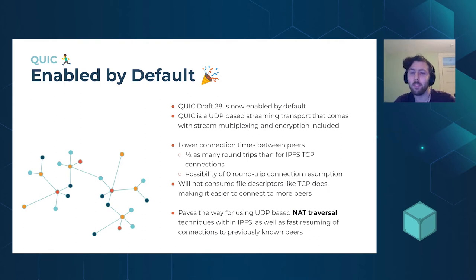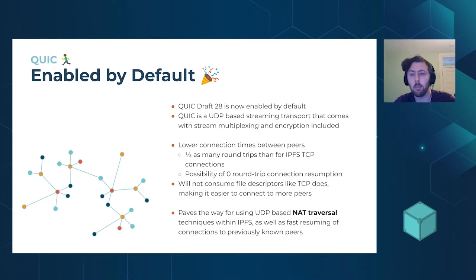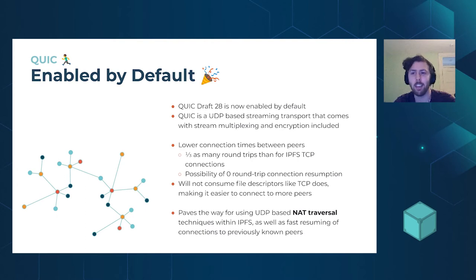QUIC paves the way for UDP-based NAT traversal techniques within IPFS. UDP NAT traversal is much easier to accomplish and more well understood than TCP NAT traversal. This should make finding and providing content from peers behind NATs or on cellular networks — which don't allow other peers to initiate connections — start working.